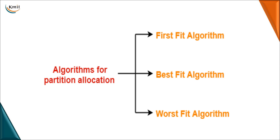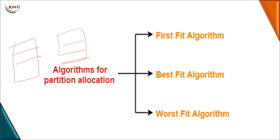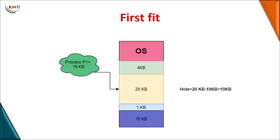When you have a memory with multiple partitions, you need to decide which partition to assign to which process. This is handled by partition allocation algorithms. There are three options: first fit, best fit, and worst fit.